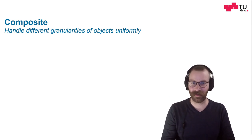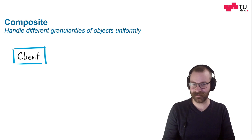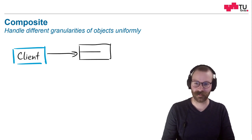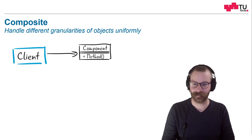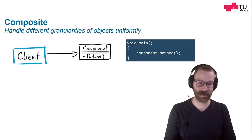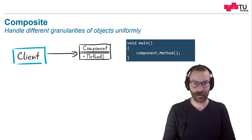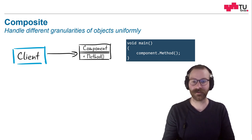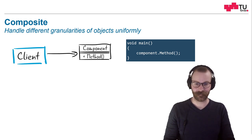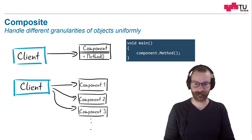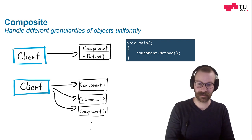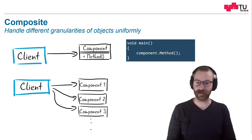Let me give you an example. We, as a client, want to call some method from another component. As source code this can look like this. Here we are calling just a single method on a single object. What if we have the following structure? We are not calling a single component, but multiple ones.